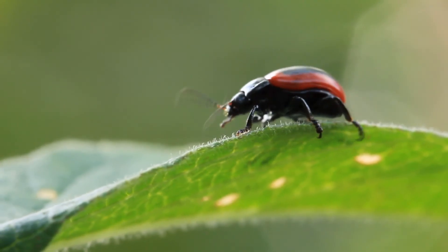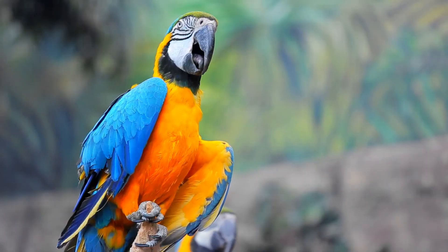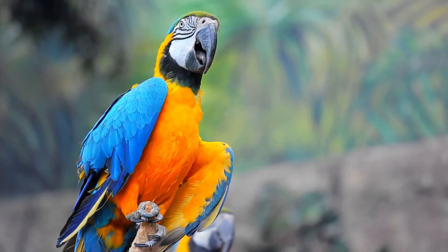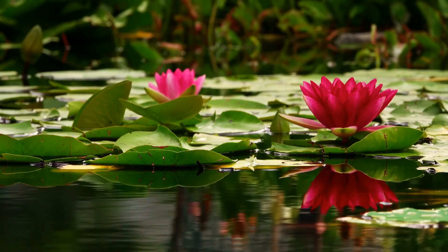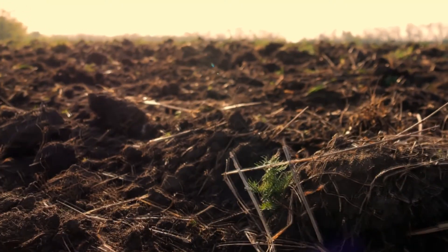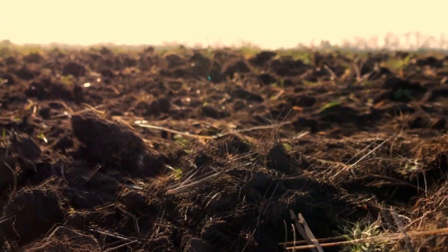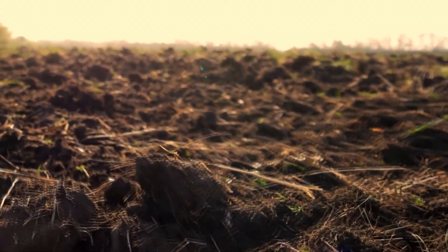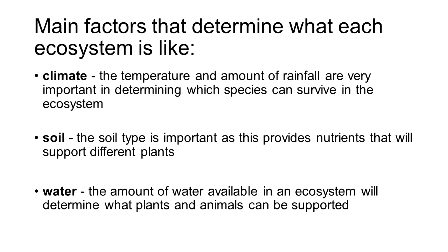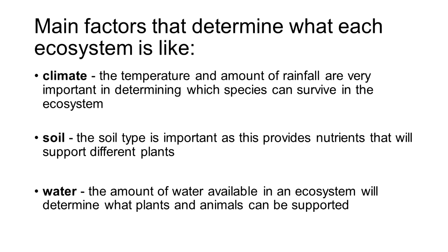Biotic stands for living components such as plants and animals, and abiotic refers to non-living components such as the soil. Now there are a couple of different factors that determine what kind of ecosystems we see. So the climate, soil, and water all influence what type of ecosystems we get.